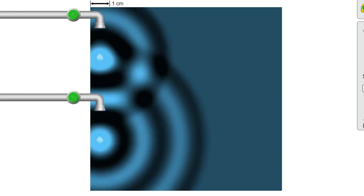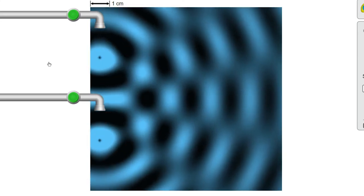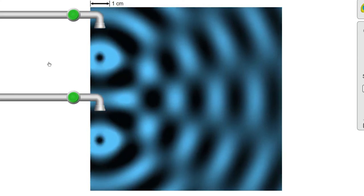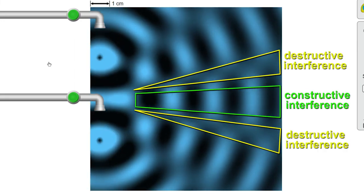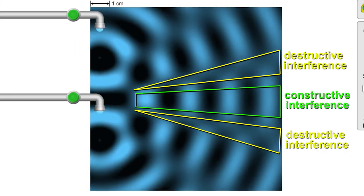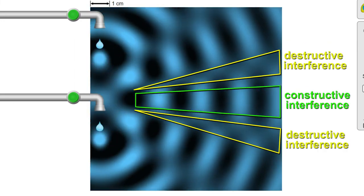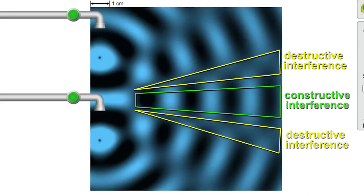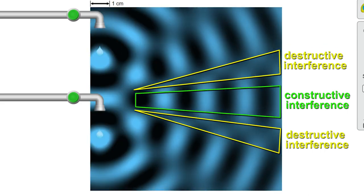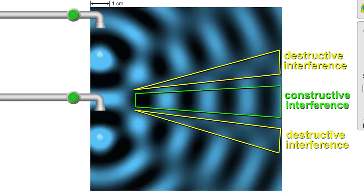You can also see constructive and destructive interference in a wavefront model. See where the crests, the blue parts overlap with the troughs, the black parts of this wave. Those waves cancel out. They get kind of fuzzy. That's the destructive interference. And areas where the waves stay nice and clear and sharp are the constructive interference.